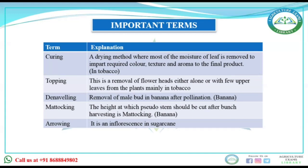Topping is the removal of flower heads — either flower heads alone or with a few upper leaves — and is also done in tobacco. Denaveling is the removal of the male bud after pollination. So the question was related to denaveling only.